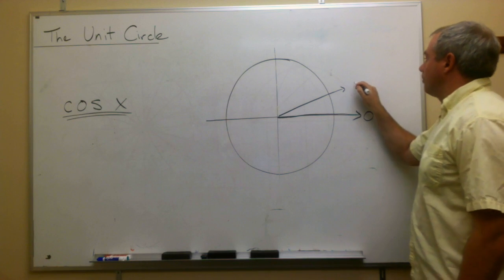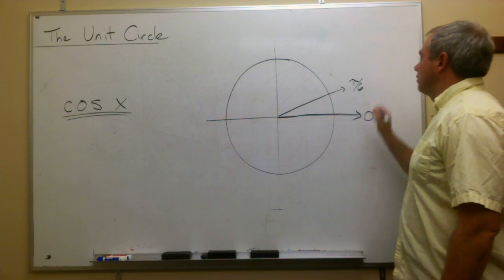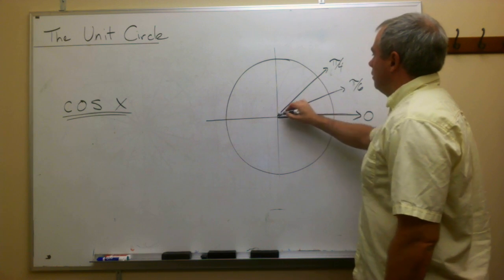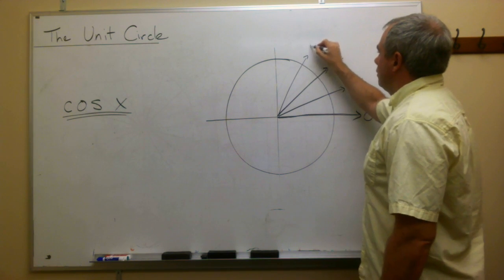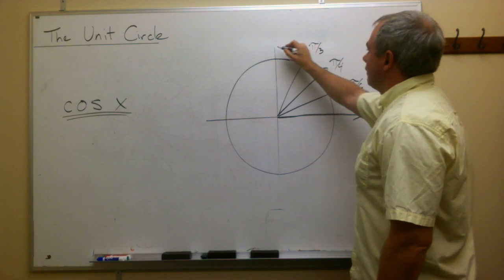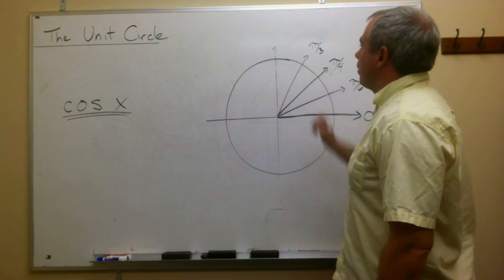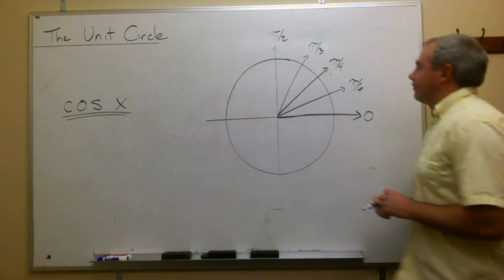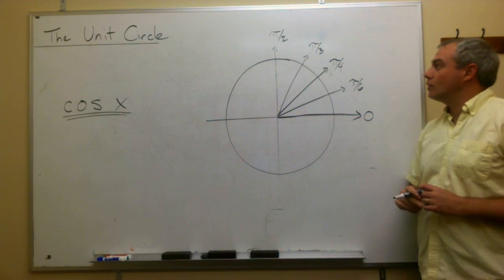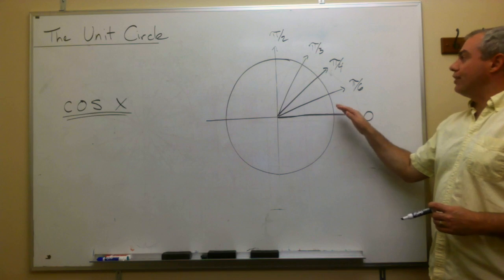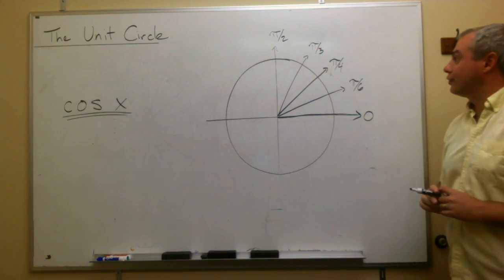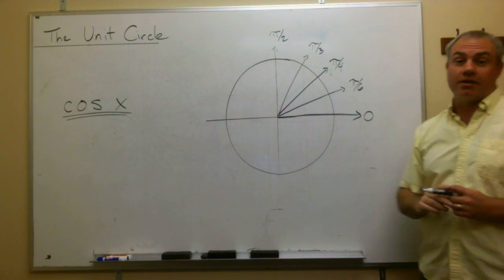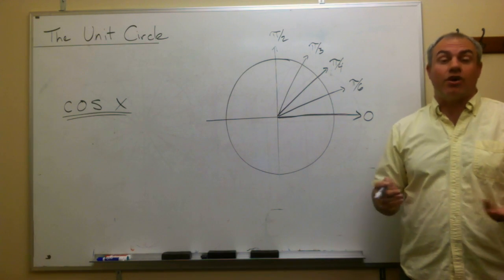Here we have the angle pi over four. Here's the angle pi over three. And then finally, the positive y-axis we call the angle pi over two. Okay, so these are five really important angles that we should be familiar with and we should understand what their position is on the unit circle.